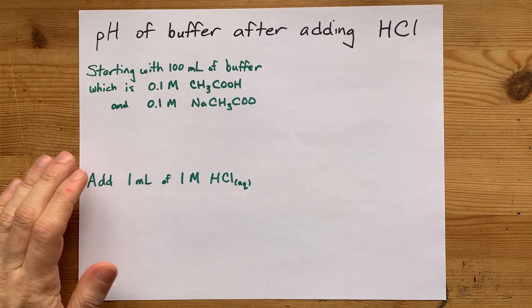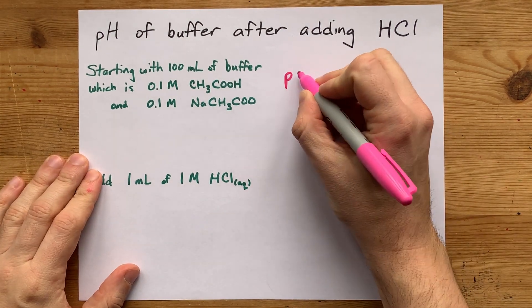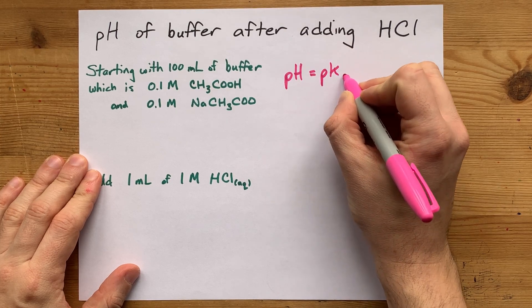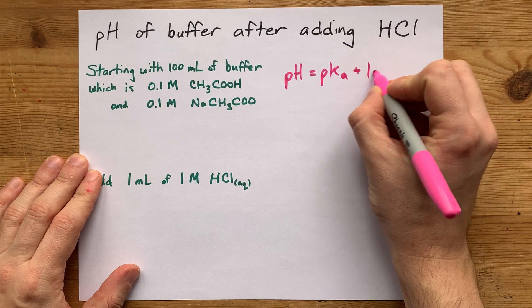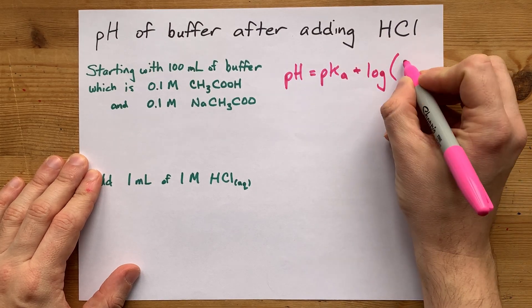Now the equation we use to calculate the pH of buffers is usually the Henderson-Hasselbalch equation. pH equals pKa plus the log of base over acid.